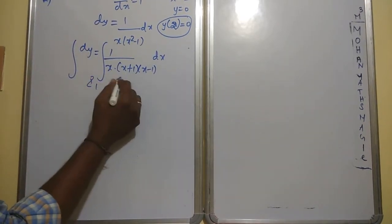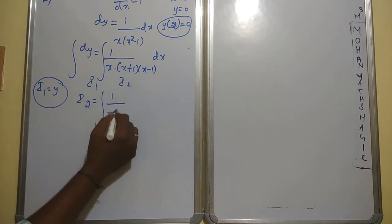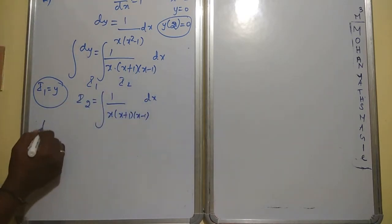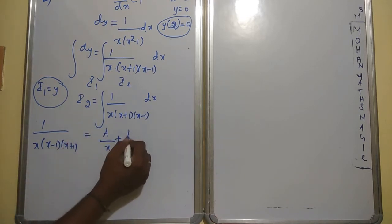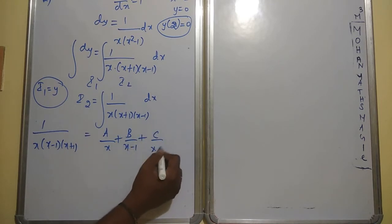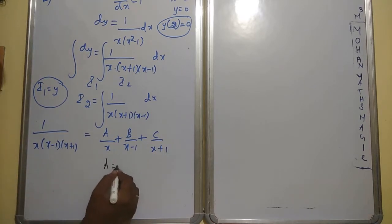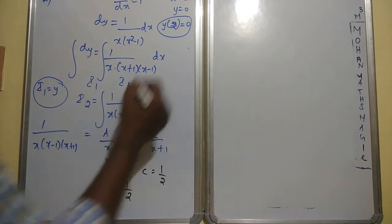Integrate both sides: I1 = y, I2 = partial fractions. Using CSK3 (three single brackets), 1/[x(x-1)(x+1)] = A/x + B/(x-1) + C/(x+1). Solving directly: A = -1, B = 1/2, C = 1/2.